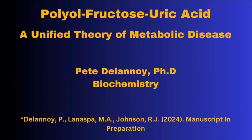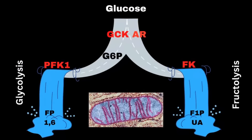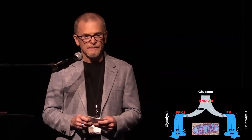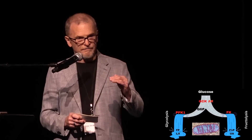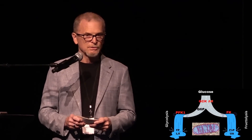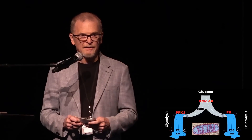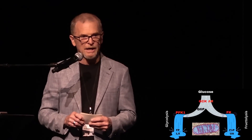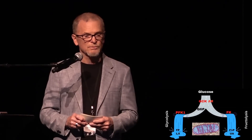Here you're looking at the survival switch, constituted by four enzymes: glucokinase, aldose reductase, fructokinase on the right, and phosphofructokinase-1 on the left. Glucokinase and aldose reductase sit atop a fork in the road. The left side is the cellular choice to do glycolysis; the right fork is the cellular choice to do the polyol pathway into fructokinase and then full-on fructose-uric acid metabolism.